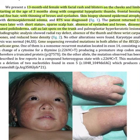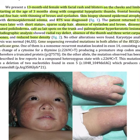Cafe-au-lait spots on the trunk and palmoplantar hypokeratotic lesions were also noted. Radiographic analysis showed radial ray defect, absence of the thumb and three wrist carpal bones, and reduced bone density. No other alterations were found. Karyotype analysis was normal. Gene sequencing revealed mutations in both alleles of the RECQL4 helicase gene, confirming the diagnosis of Rothmund-Thomson syndrome.